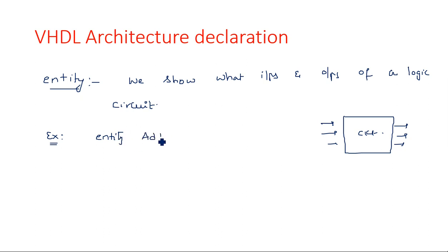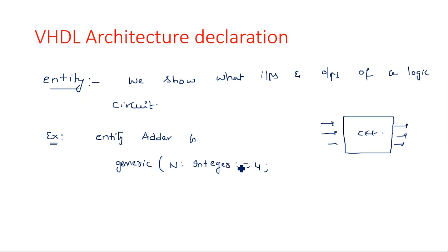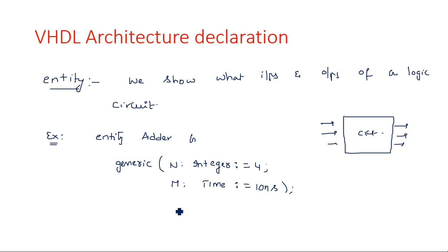Entity also consists of generic statements along with inputs and outputs. For example: entity 'some_adder' is generic — generic N is an integer type having a value of 4. The ':=' representation is for constant, meaning N value is constant throughout this program and cannot be varied. Similarly, M is a time instant equal to 10 nanoseconds.